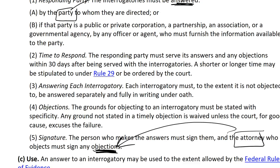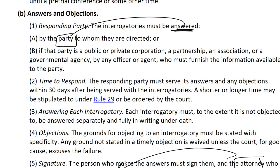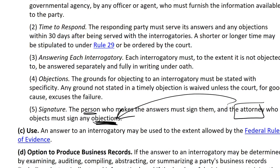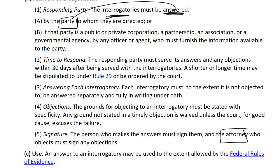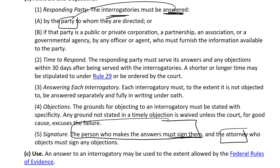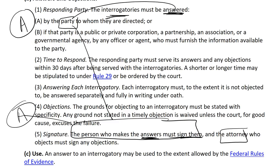In your typical case litigated in federal court, the party is going to be represented, and it's the attorney who signs the objections. The party makes the answers and signs them. The only thing the attorney signs is any objections. Each interrogatory must, to the extent it's not objected to, be answered separately and fully in writing under oath.